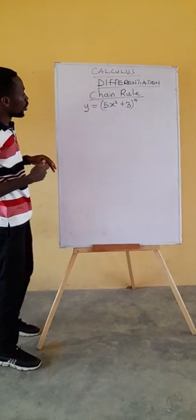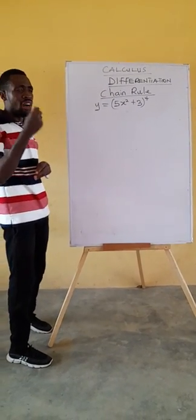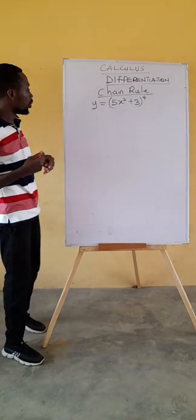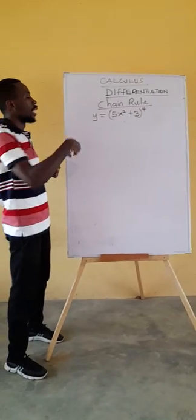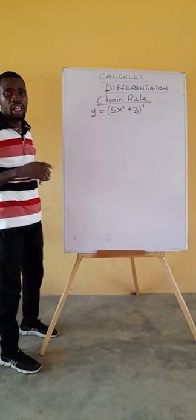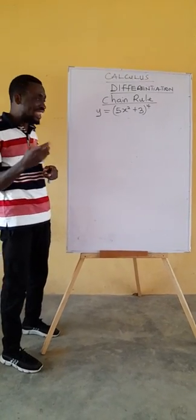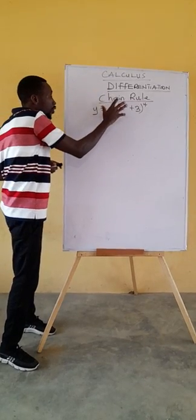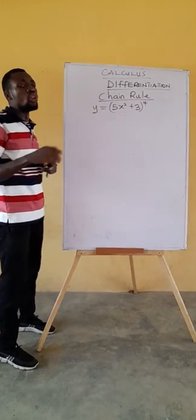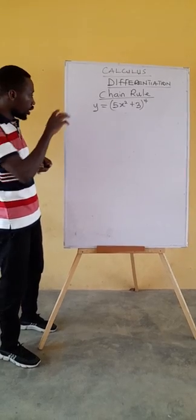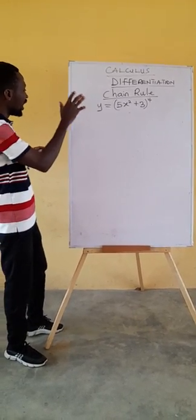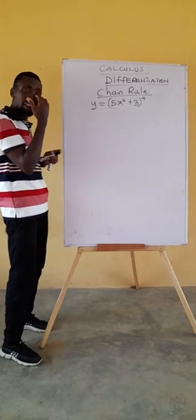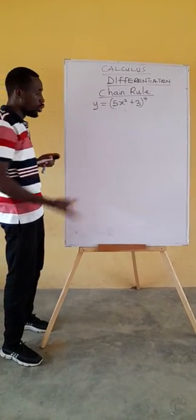Remember in our last video, we said that to find the derivative of a function, drop the power and subtract 1 from the exponent. If you want to use that idea to find the derivative of this function, you will not be able to get the answer correct. There is a way of doing it. However, a simple way of finding the derivative is using chain rule.